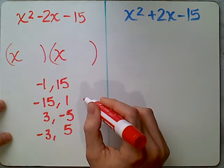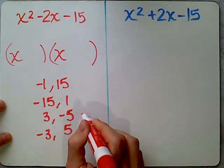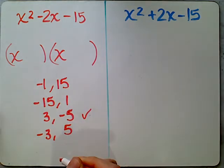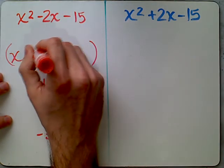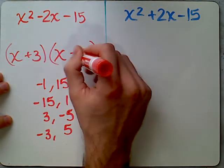This here will add to negative 2. This last set will add to a positive 2. So we want to take these two terms, the positive 3 we can put right here, and the negative 5 we can put there.